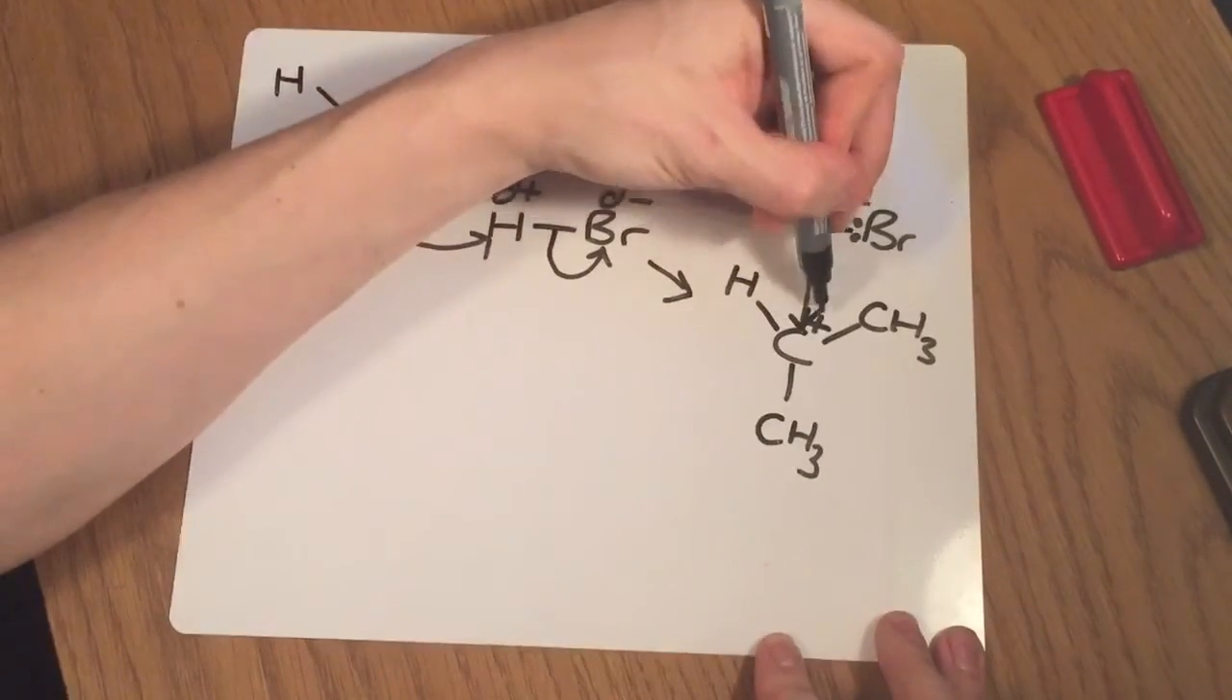Now, these two, negative and positive, are going to attract to each other, and specifically, this lone pair from the bromine, it does have three other lone pairs, but we don't show them all. This is going to attack this carbon just here, like that, so a curly arrow straight to the carbon.